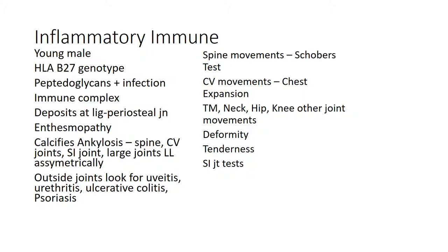In the inflammatory immune group, you have a young male with HLA-B27 genotype who has an infection with a peptidoglycan-positive organism. The peptidoglycans and the antibody in this individual, which act as haptens, produce an immune complex. This immune complex deposits at the ligamentum-periosteal junction causing enthesopathy, leading to tenderness, spasm, and stiffness that specifically increases in the morning and with cold wet weather. The ligament calcifies, leading to ankylosis of the spine.